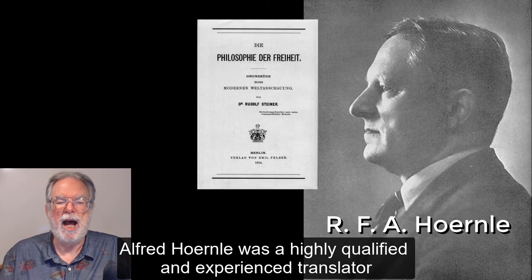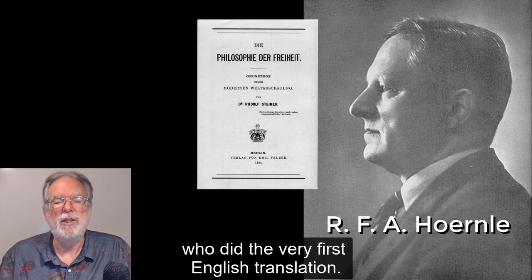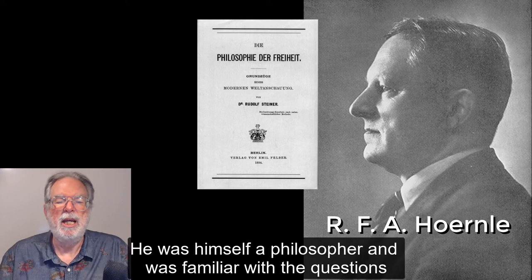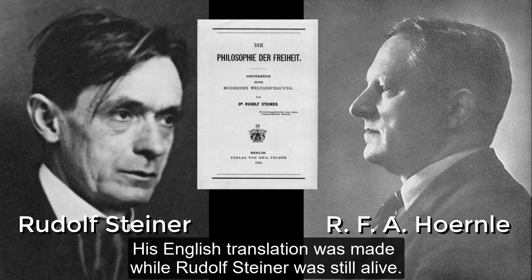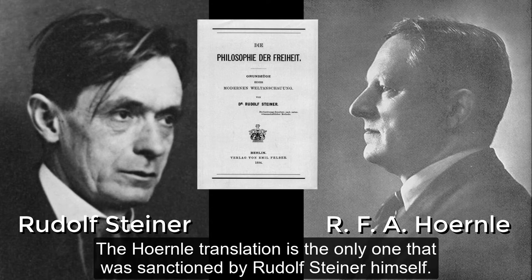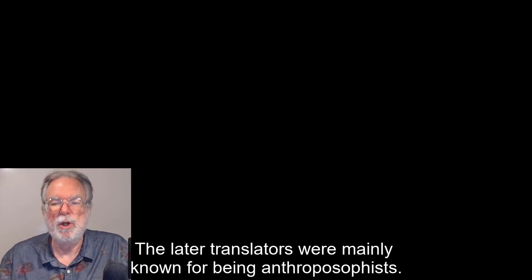Alfred Hornell was a highly qualified and experienced translator who did the very first English translation. He was himself a philosopher and was familiar with the questions that Steiner discusses in the Philosophy of Freedom. His English translation was made while Rudolf Steiner was still alive. The Hornell translation is the only one that was sanctioned by Rudolf Steiner himself.